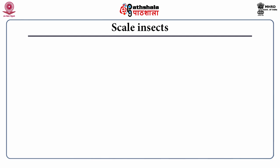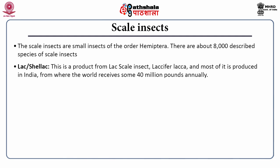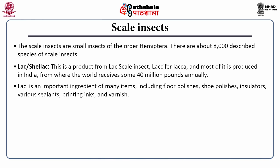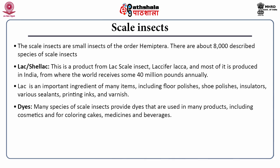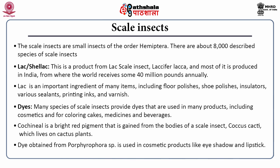Scale insects are small insects of the order Hemiptera, with about 8,000 described species. They produce a substance called lac or shellac, a product obtained from the scale insect Laccifer lacca; most of it is produced in India, from where the world receives some 40 million pounds annually. Lac is an important ingredient of floor polishes, shoe polishes, insulators, sealants, printing inks and varnish. Scale insects are also used as a source of dyes for cosmetics and for coloring cakes, medicines and beverages. Cochineal is a bright red pigment gained from the bodies of the scale insect Coccus cacti, which lives on cactus plants. Dye obtained from Porphyrophora species is used in cosmetic products like eye shadow and lipsticks.